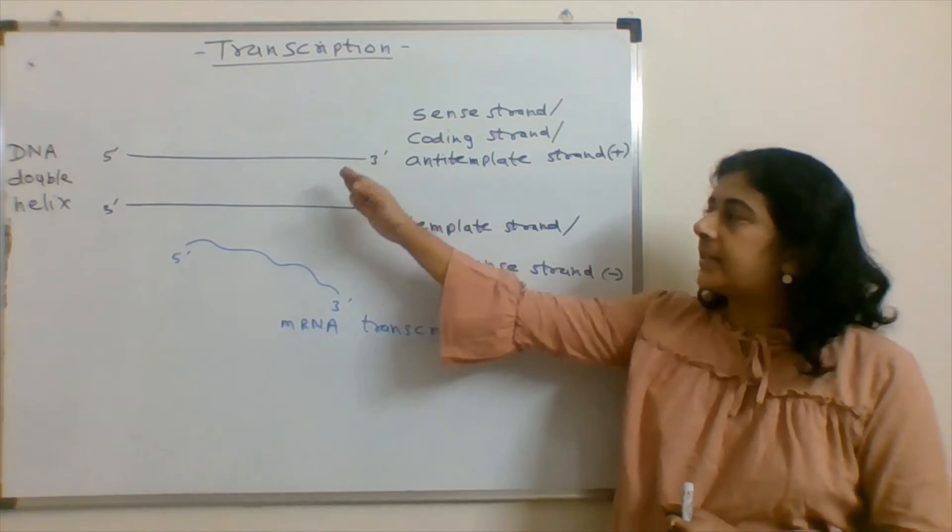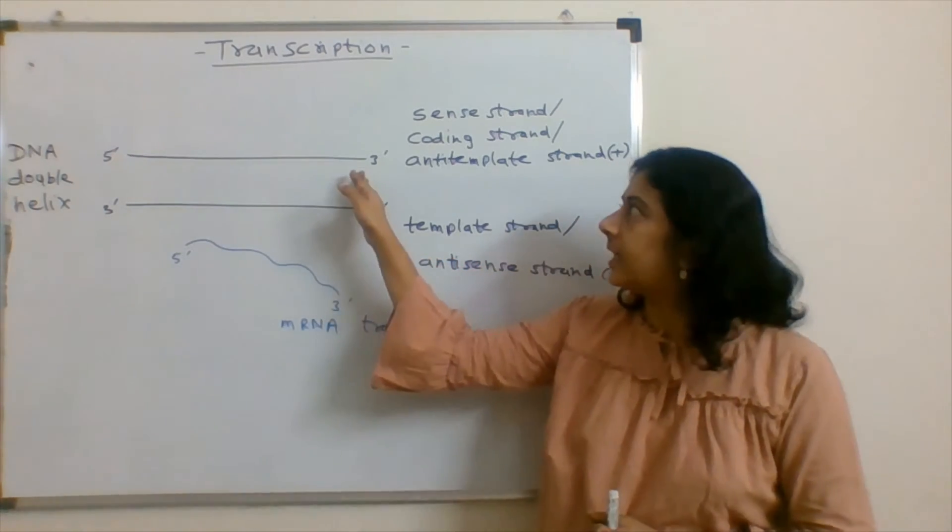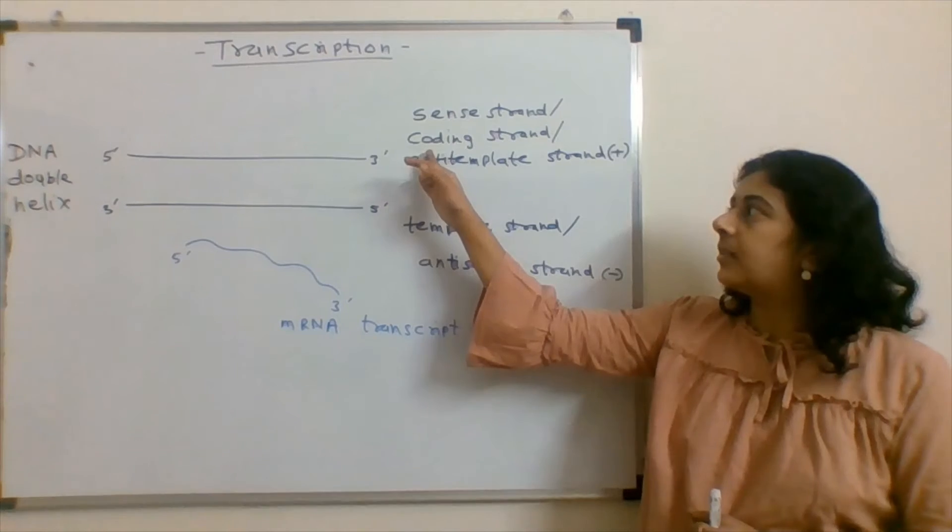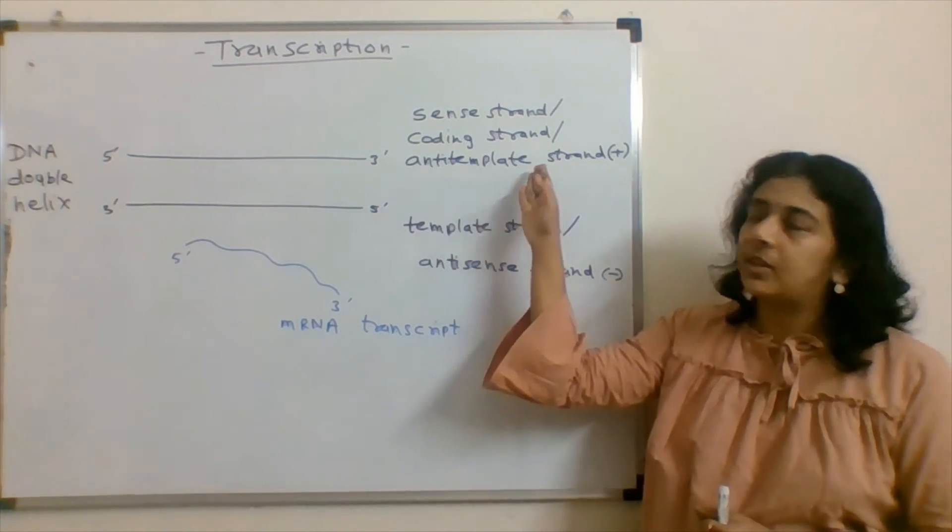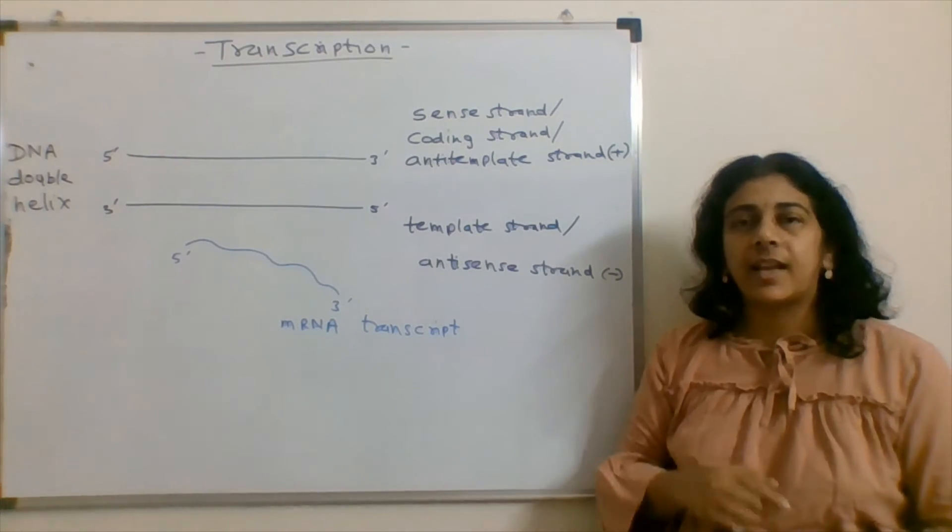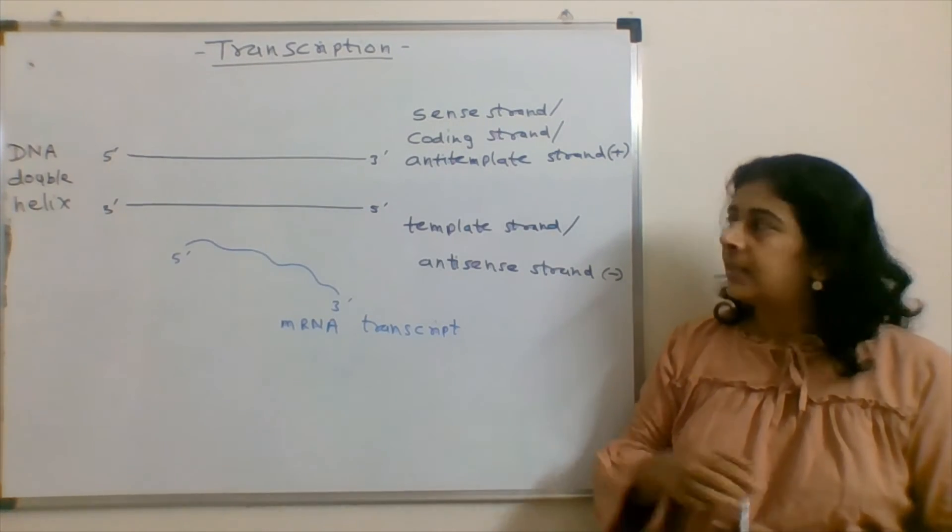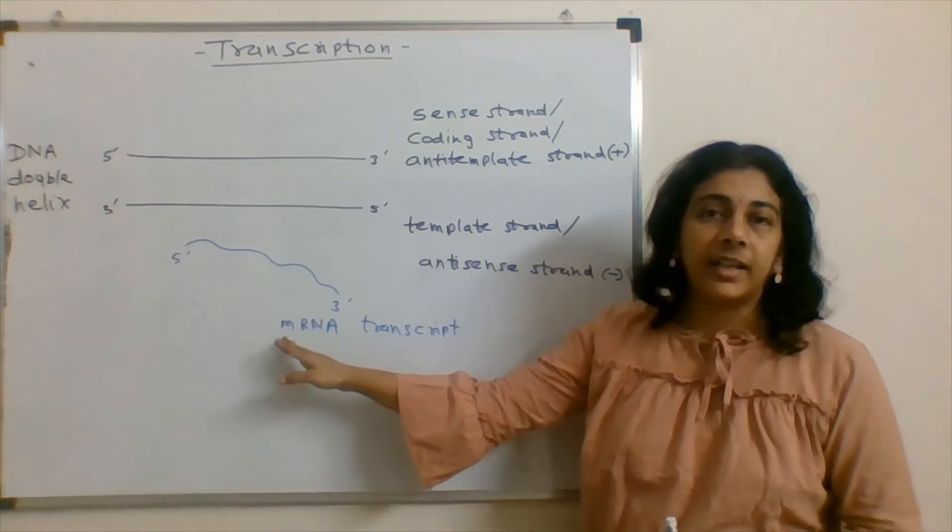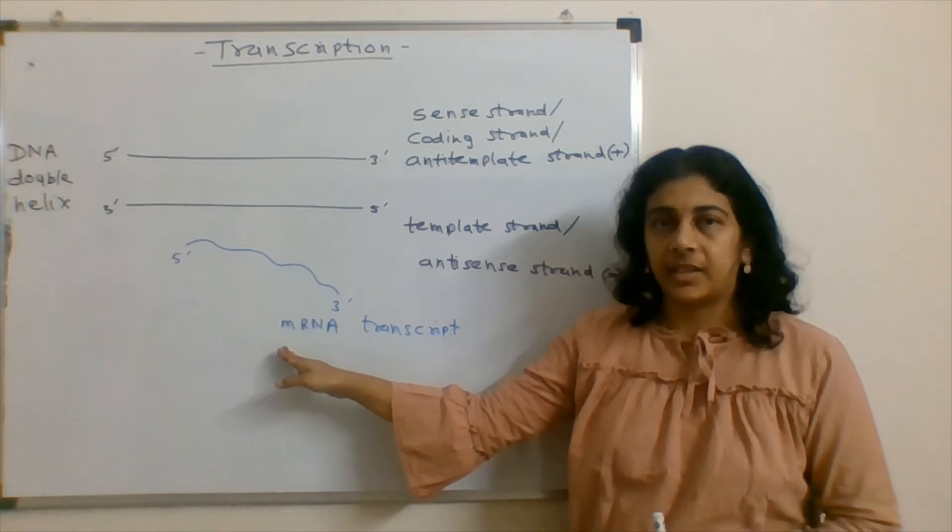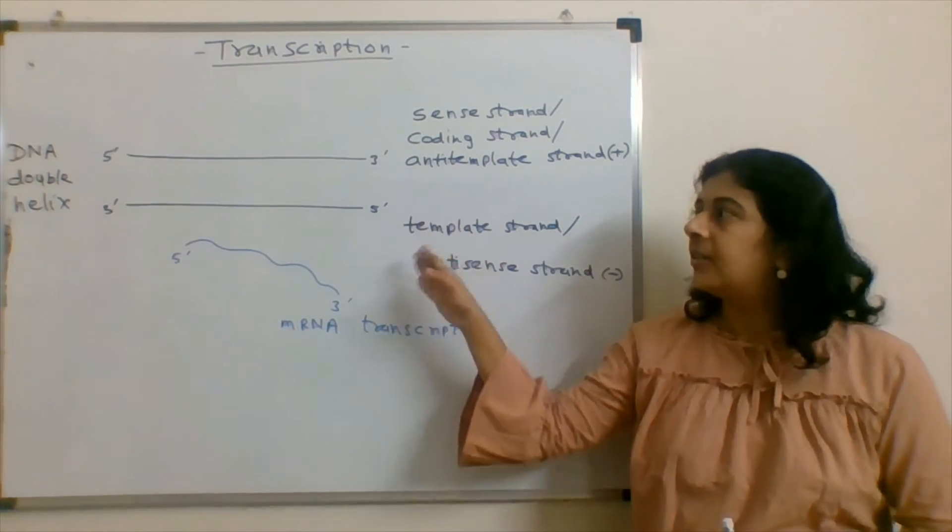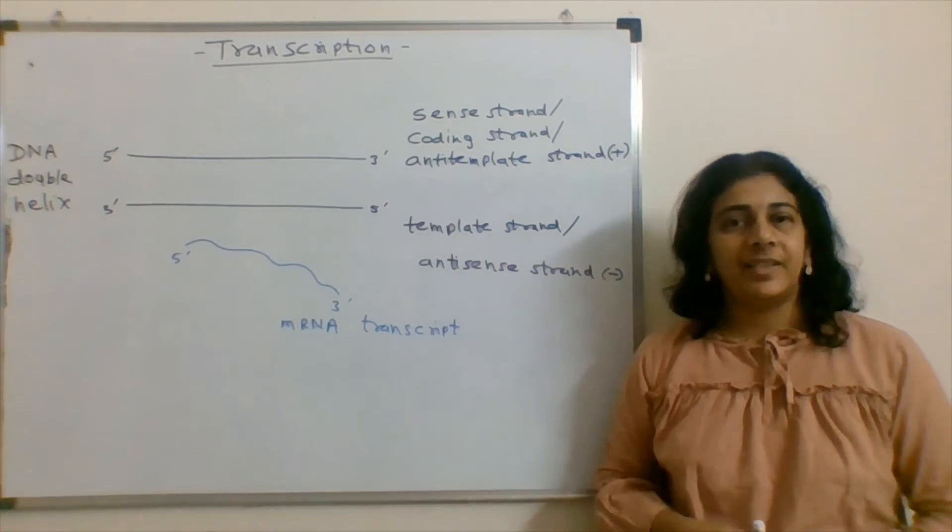The second strand of the DNA is known as a sense strand. It is also called as a coding strand or we can call it as an anti-template strand and can be denoted as a plus sign. It is having identical sequence with the mRNA. So these are the different names we can see for the two DNA strands.